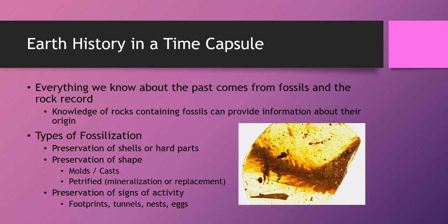Finally, you can have fossils that show signs of activity, such as footprints, tunnels, nests, or eggs. Knowing the types of fossils and how they're formed, knowing the types of rocks and how they're formed, and knowing how to date rocks relative to one another and how to use radiometric dating to put direct years on each of the rocks — all of this information provides us everything we know about the history of Earth.